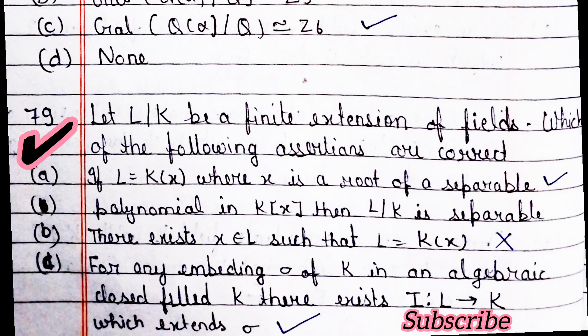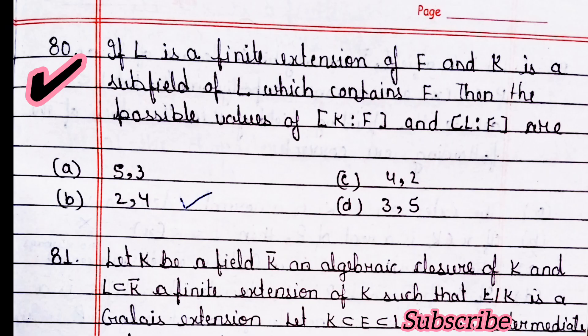Question 79: let L/K be a finite extension of fields. Which assertions are correct? Statement one: if L equals K(x) where x is the root of a separable polynomial in K[x] and L/K is separable — this is true. Statement two: there exists x in L such that L equals K(x) — this is wrong. Statement three: for any embedding sigma of K into any algebraically closed field, there exists a map from L to that field extending sigma — this is correct.